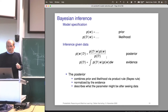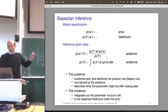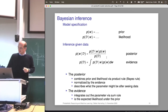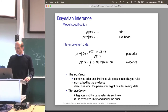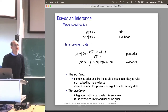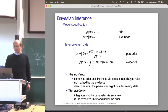In this Bayesian model selection framework, we can look at the evidence for our different models. More flexible models can explain many more data sets, so the evidence for each specific data set is smaller. More specific functions like a parabola or linear function are more specialized — they put all their weight on a smaller set of data sets, so the evidence there is larger. That's why the evidence is something useful for model comparison.